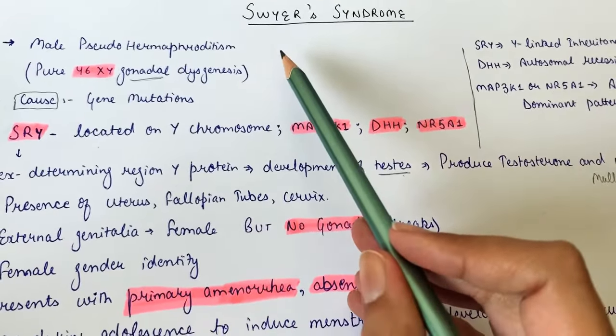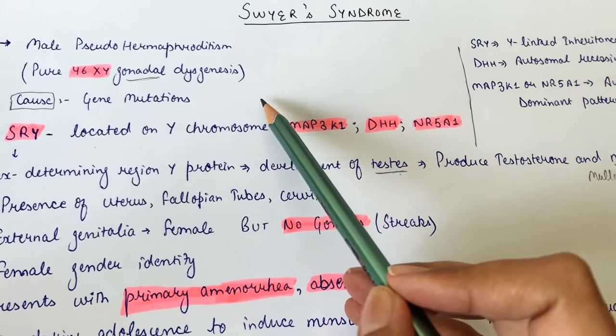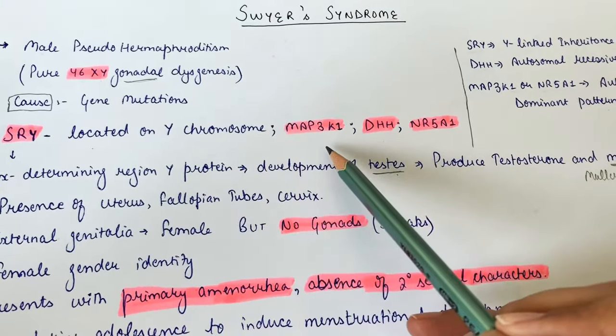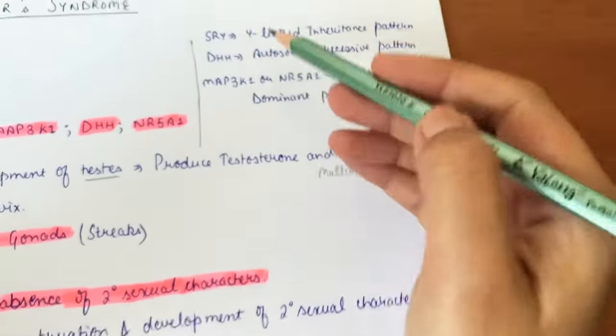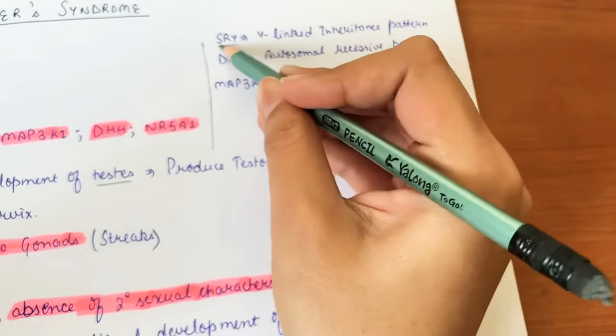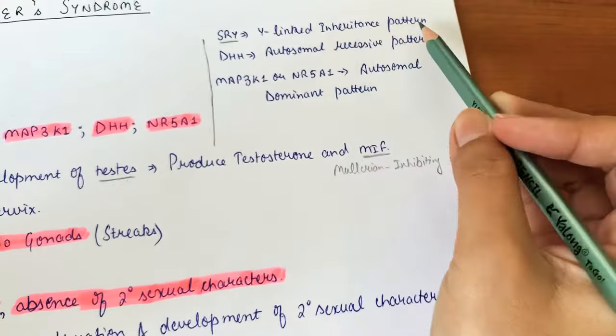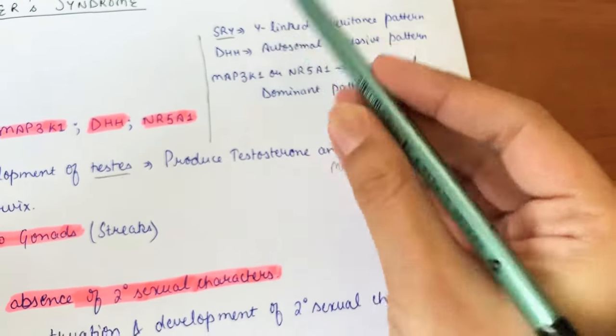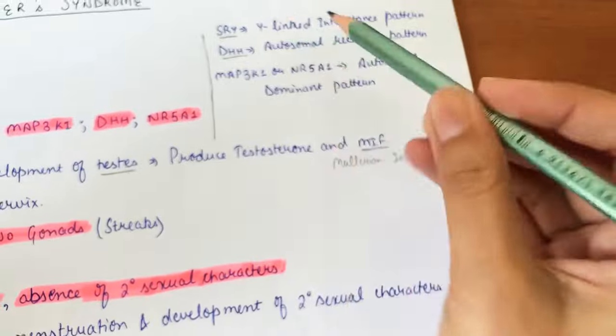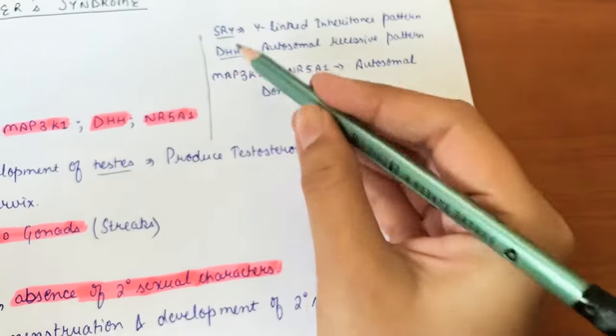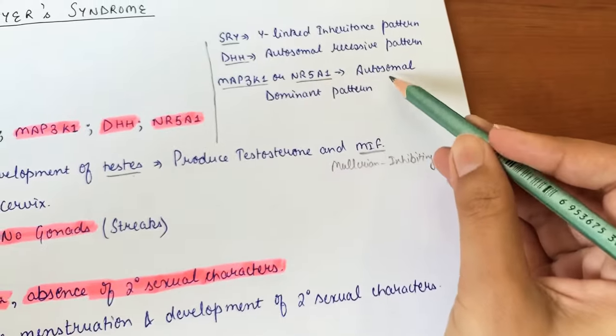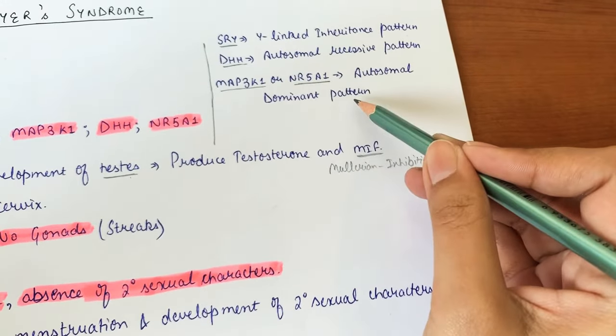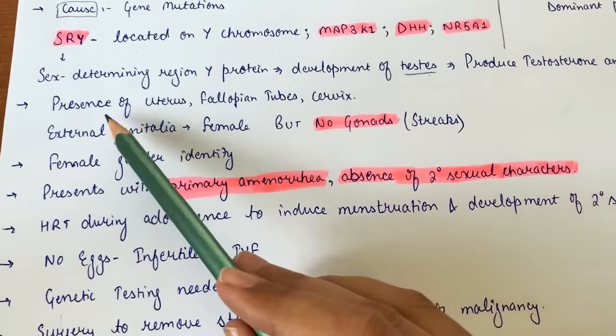However, in cases where it is inherited, the inheritance pattern depends on which gene is mutated. SRY mutation shows Y-linked inheritance. DHH mutation shows autosomal recessive pattern. MAP3K1 or NR5A1 mutations show autosomal dominant inheritance pattern.